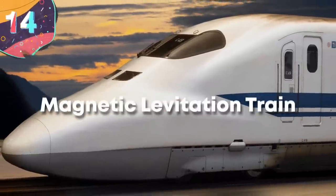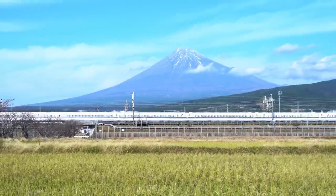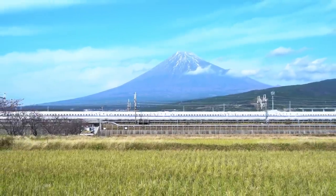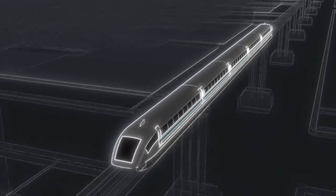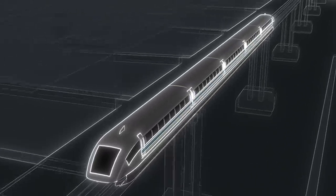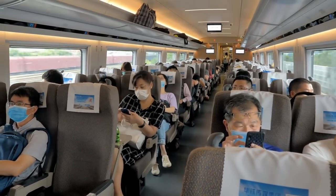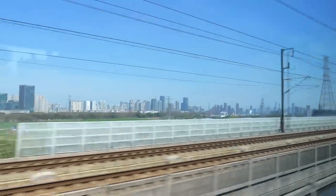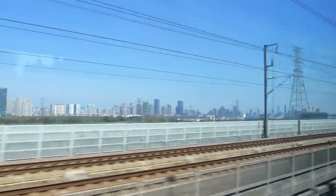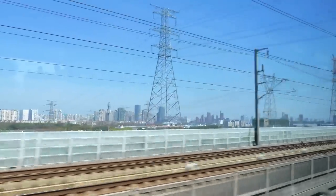14. Magnetic Levitation Train. Moving on from a machine at the frontiers of science, our next entry is more the kind of thing you'd find in science fiction. The magnetic levitation train, also known as a maglev train, is a remarkable technological marvel that's revolutionized the world of transportation. With its ability to defy gravity and glide effortlessly above the tracks, the maglev train offers an unparalleled travel experience that combines speed, efficiency, and innovation.